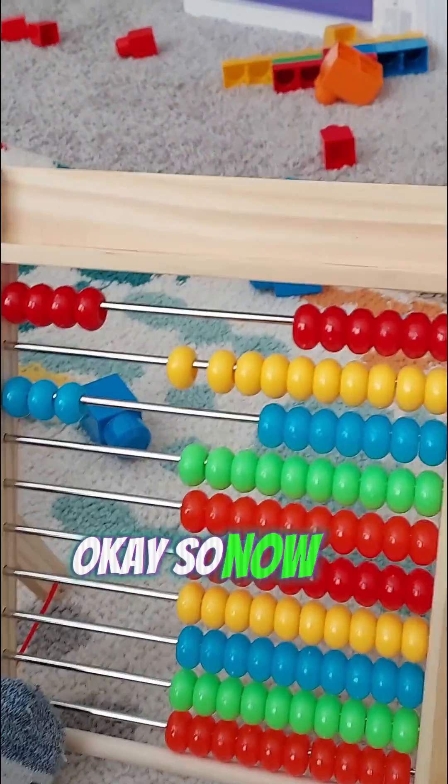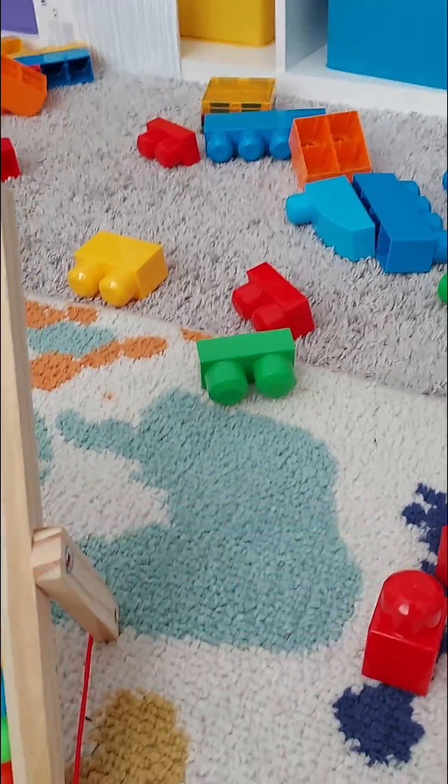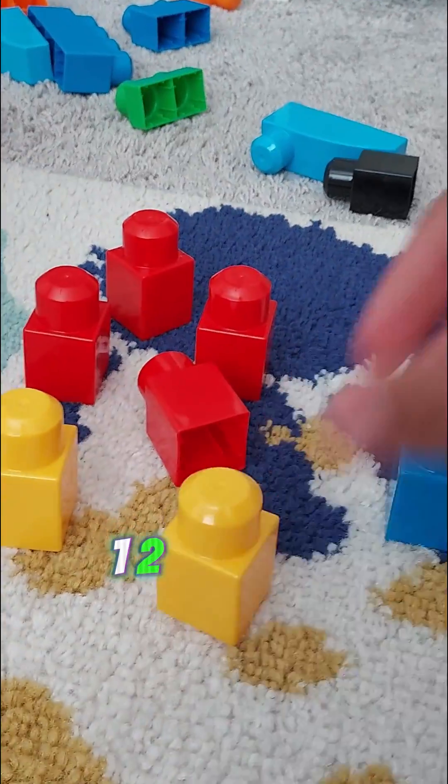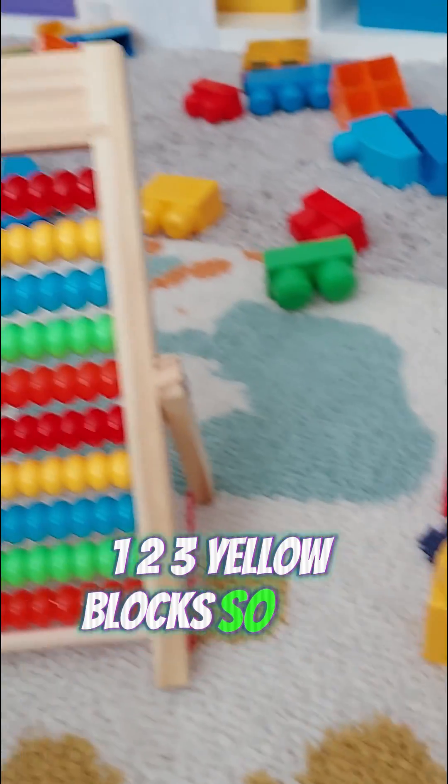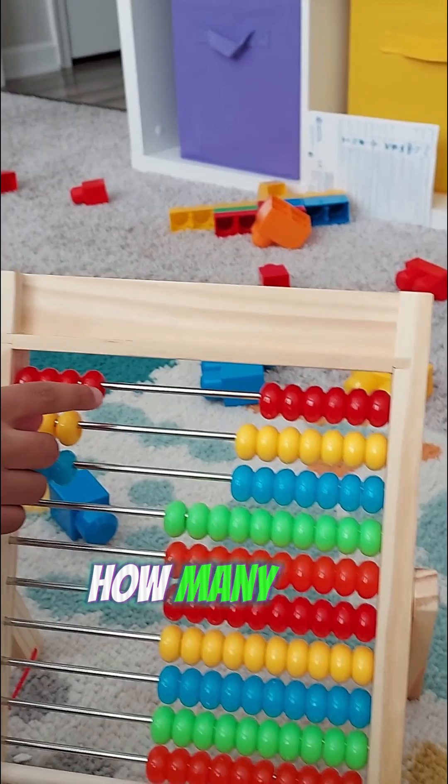Okay, so now if I have those seven blocks and I add one, two, three yellow blocks, so plus three, how many do I have now?